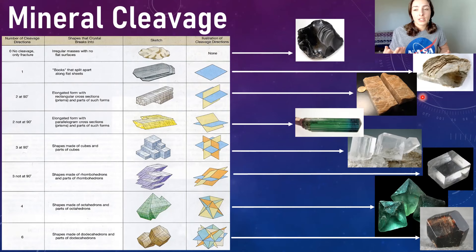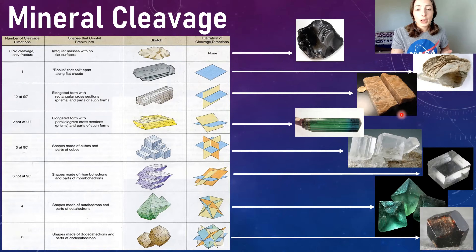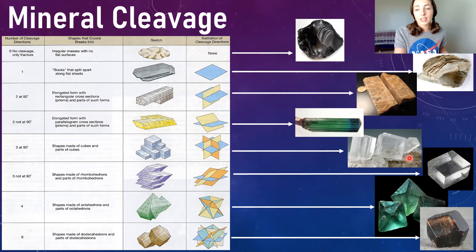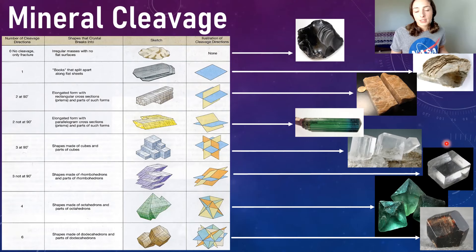Minerals with two different planes of cleavage have what's called prismatic cleavage, which breaks down into two types: minerals such as orthoclase that break along two planes at 90 degrees to one another, and types that break along two planes not at 90 degrees. Then we have halite, an example of cubic cleavage — three cleavage planes at 90 degrees to each other. Below this we have another mineral with three planes of cleavage not at 90 degrees, known as rhombohedral cleavage, exemplified by calcite, which is recognizable for its cleavage planes and the way it refracts light.